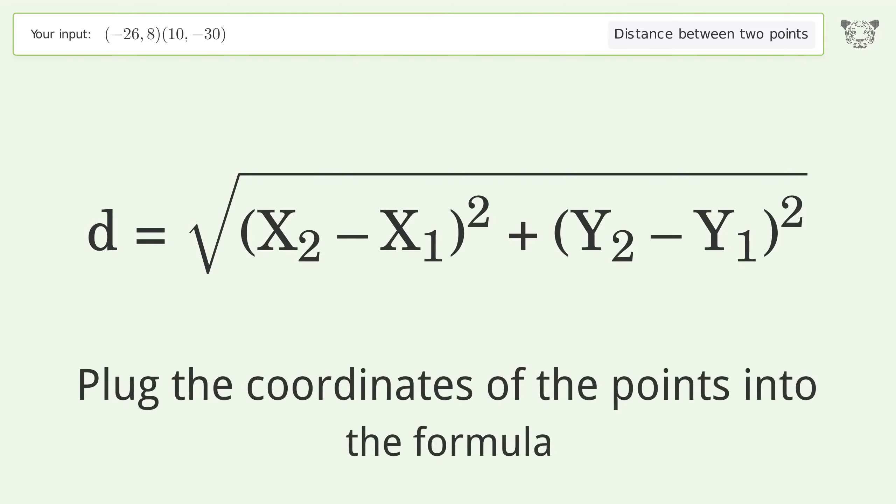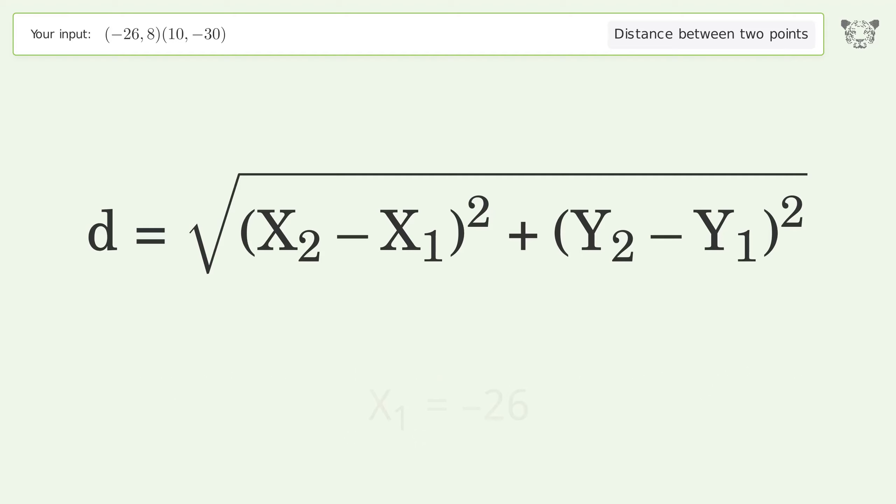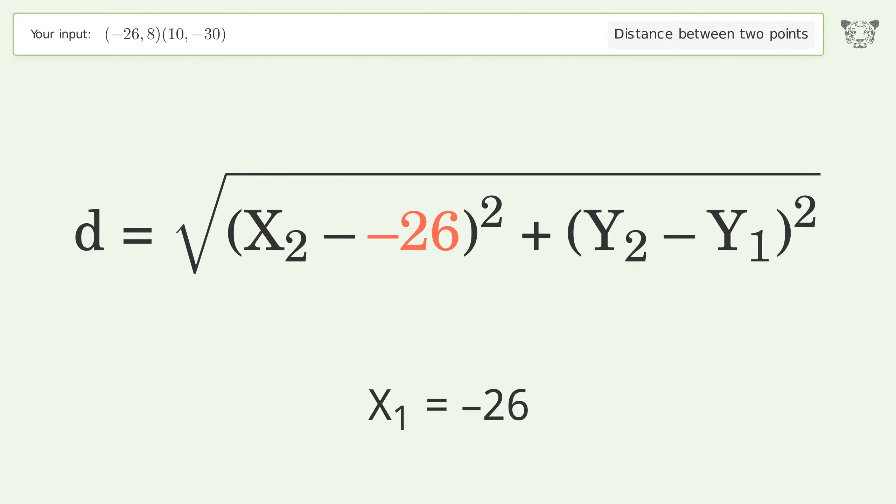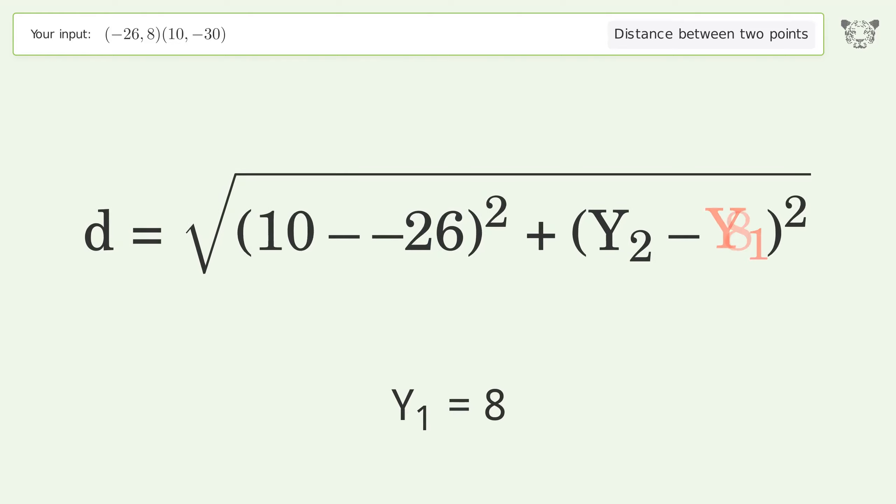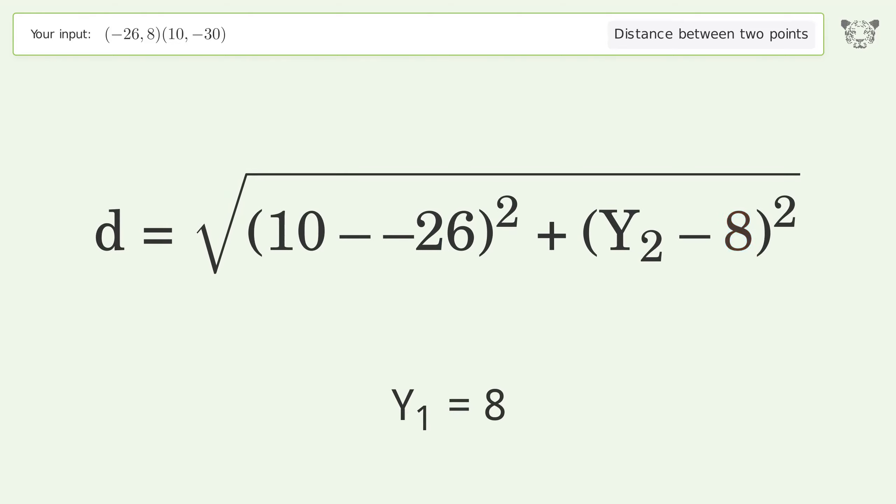Plug the coordinates of the points into the formula: x1 equals negative 26, x2 equals 10, y1 equals 8, y2 equals negative 30.